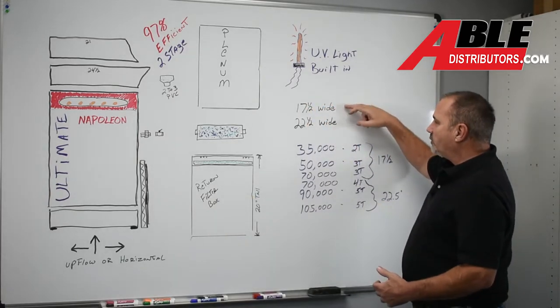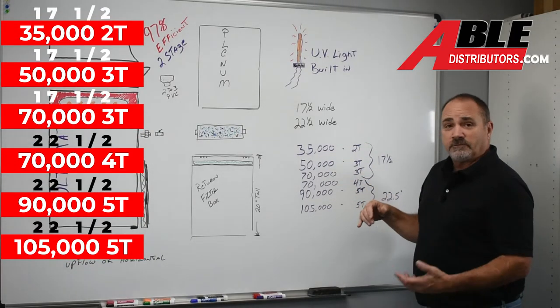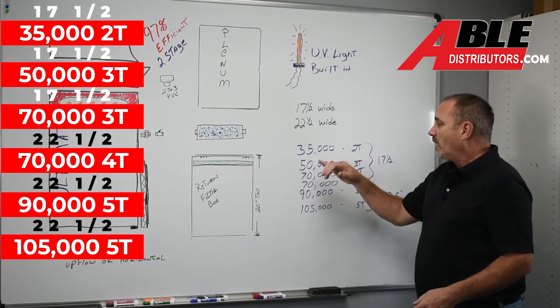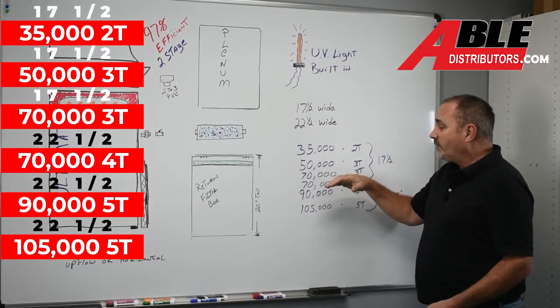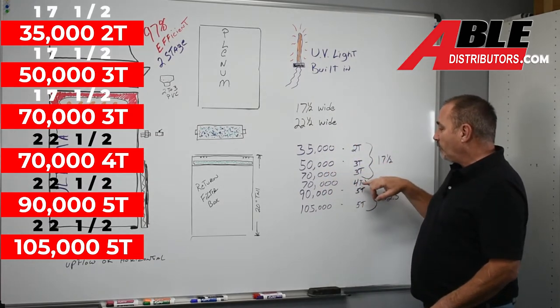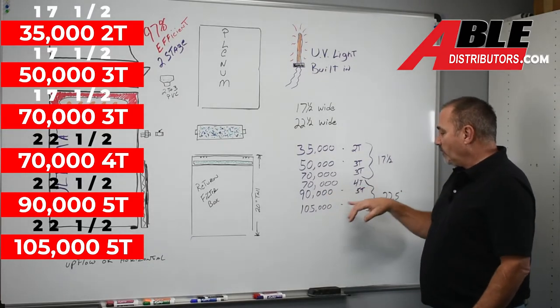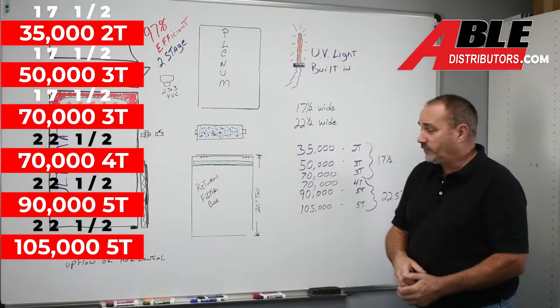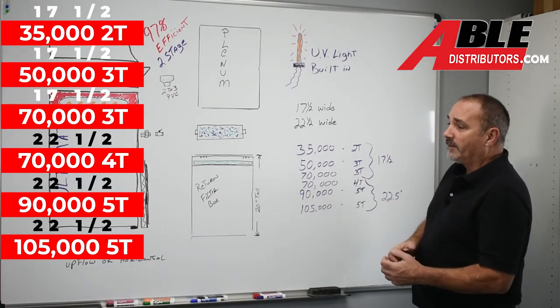Since there's only two widths, we're going to go through the sizes. You've got a 35,000 BTU with two tons of drive, a 50,000 BTU with three tons of drive, 70 you can choose. You can either go a skinny or a wide and that's either a three ton or a four ton at 70,000 BTU. 90,000 and 105 are both five tons. That separates the 17 and a half and the 22 and a half inch cabinet.